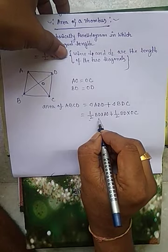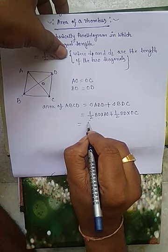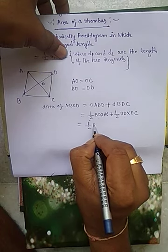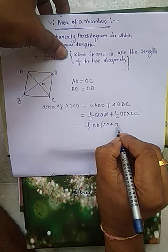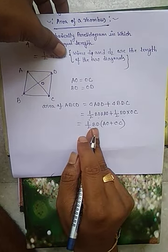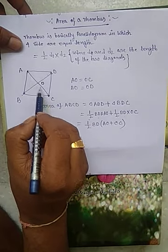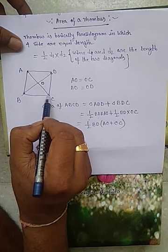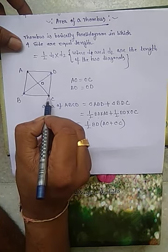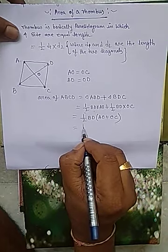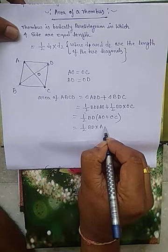Now, half BD is here, and half BD is here. So, we write, half BD into AO plus OC. Now, we notice that AO plus OC is equal to AC. So, we write, half BD into AC.